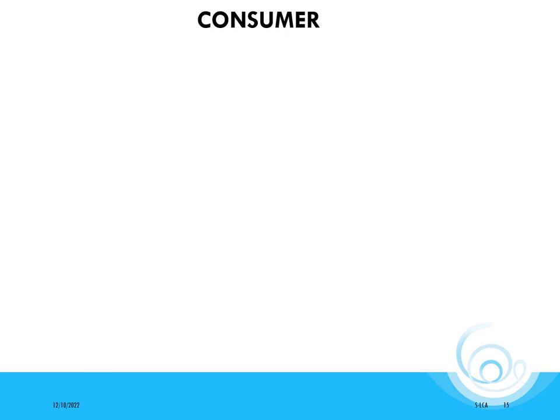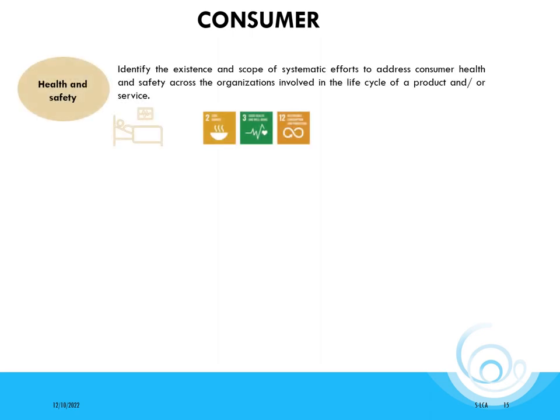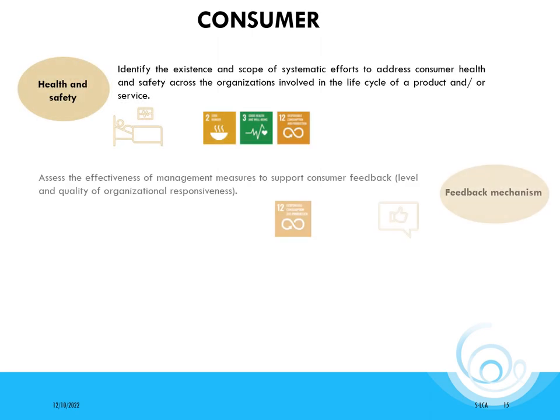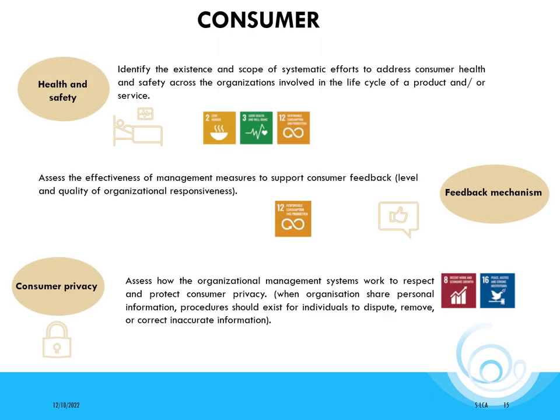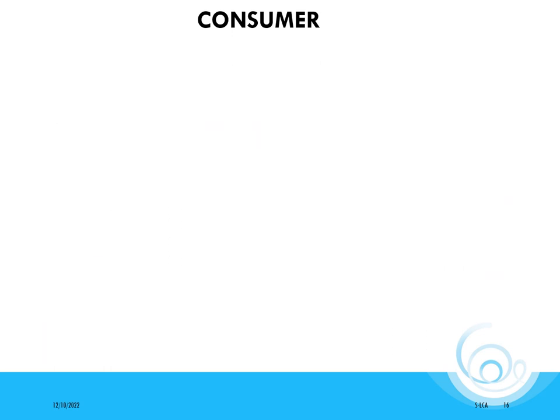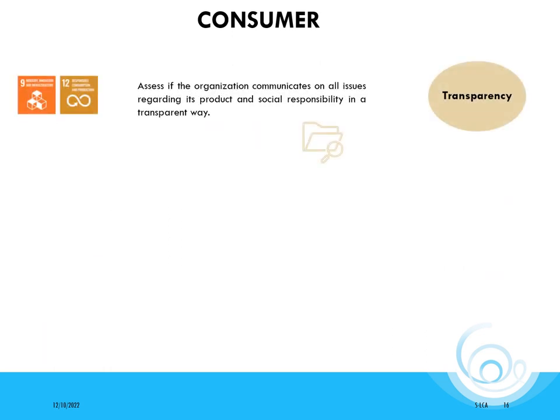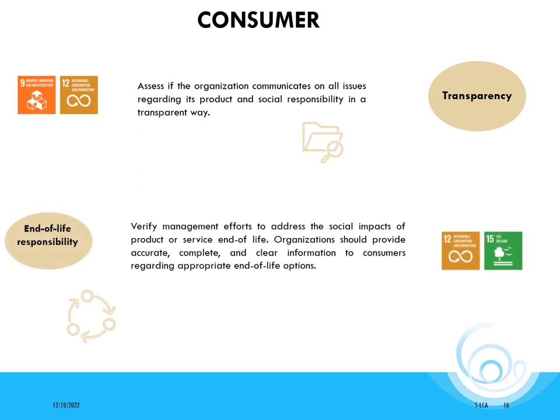We now switch to the consumer stakeholder group. The first three indicators included in this group are health and safety, feedback mechanism, and consumer privacy. The other two indicators are transparency and end-of-life responsibility.